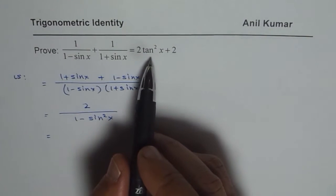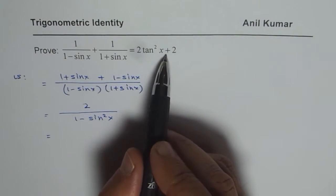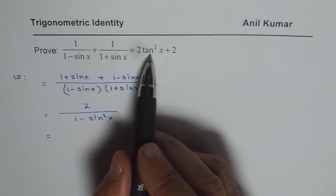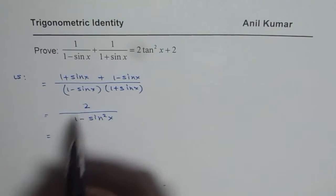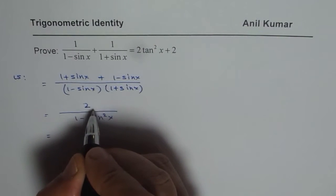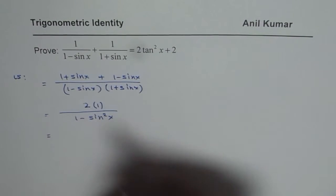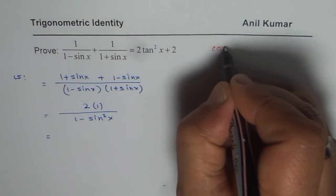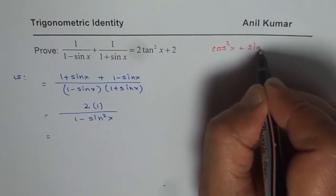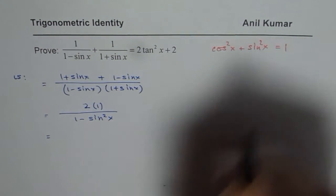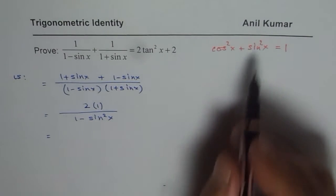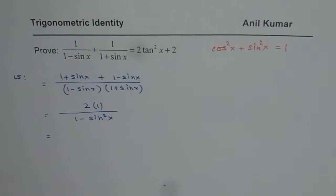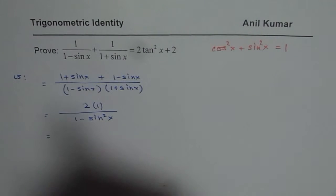However, the right side says tan square x plus 2. So what we need to do here is, we can think about 2 as 2 times 1. But the important thing here is, 1 could be written as cos square x plus sin square x is equal to 1. So we could write this 1 as cos square x plus sin square x. And that is the key to solve this identity.